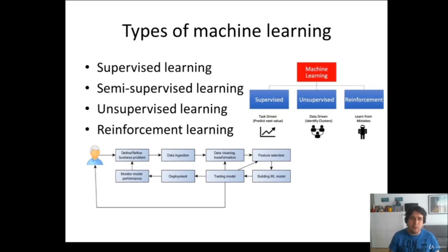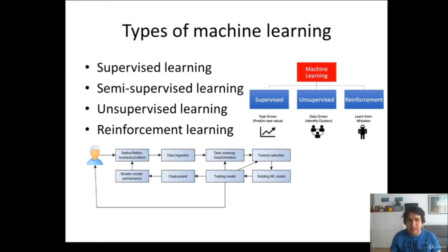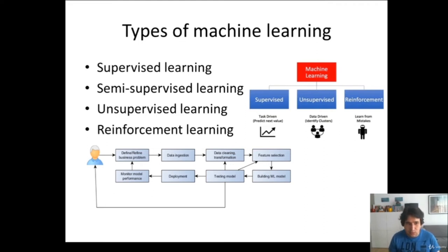Semi-supervised learning is when you don't have enough data to do supervised learning. You use the labeled data you have, make a model, apply it to the unlabeled rest of your data, label it, and then use it as a full dataset — essentially trying to make supervised learning work even when most of your data is unlabeled. You can also use tricks combining supervised and unsupervised algorithms to improve results. Generally, you want to solve a supervised task but most of your data is unlabeled.